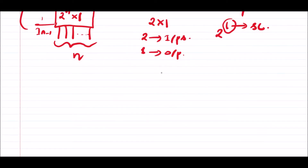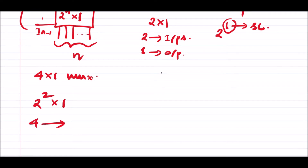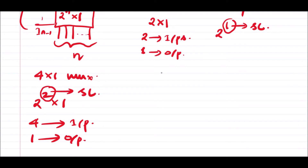Similarly, if I want to design a 4x1 multiplexer, then 4 can be written as 2 to the power 2, so we have 4 number of inputs, 1 number of output, and 2 number of selection lines. So this is how we can analyze a multiplexer.